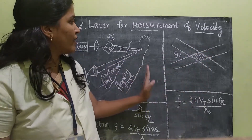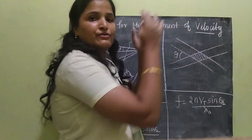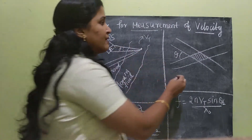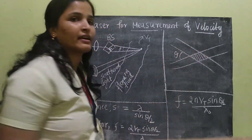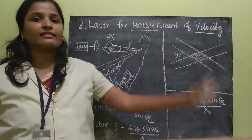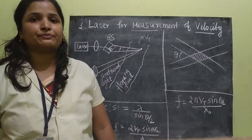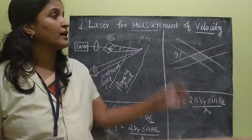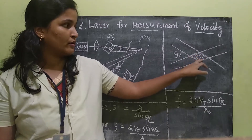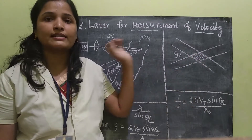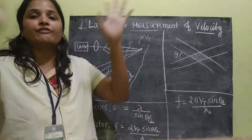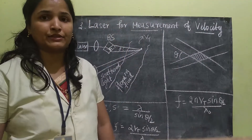When the fluid is flowing, because of the small particles, when the small particles strike this interference pattern, they will scatter the light in all directions. That is the working of it — when the particle passes nearby this interference point, the light will be scattered in all directions.